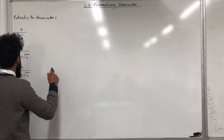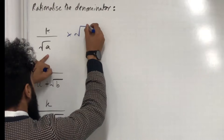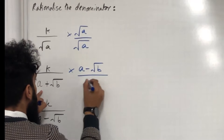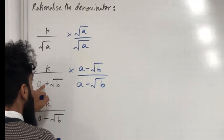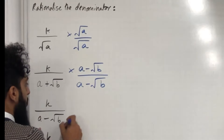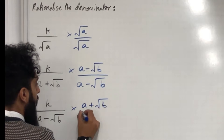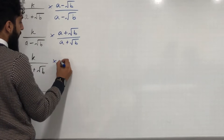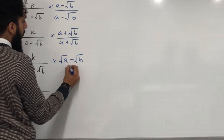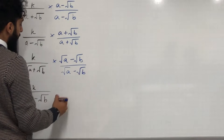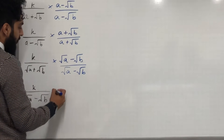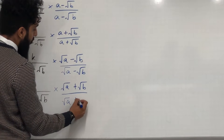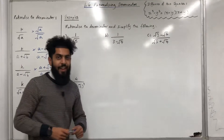For the first fraction, we multiply by √a over √a. For the second fraction, we multiply by (a − √b) over (a − √b); the inverse of plus is minus. For the third fraction, we multiply by (a + √b) over (a + √b); the inverse of minus is plus. For the fourth fraction, we multiply by (√a − √b) over (√a − √b), and for the fifth fraction, we multiply by (√a + √b) over (√a + √b).